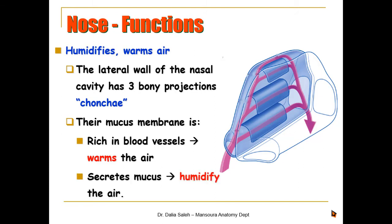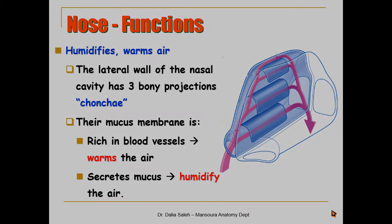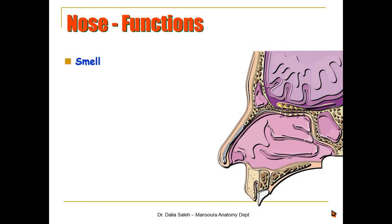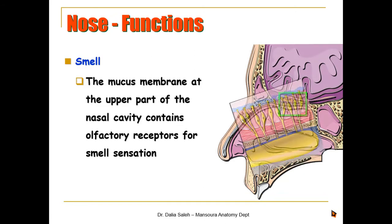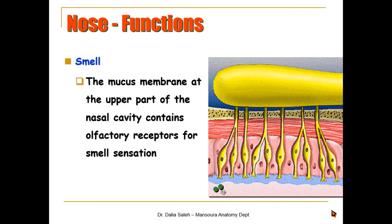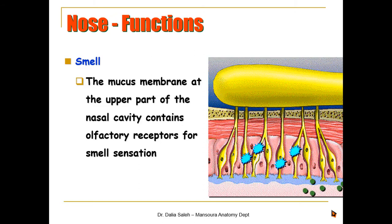Another function of the nose is smell sensation. The mucous membrane at the upper part of the nasal cavity contains the olfactory receptors. Chemical substances dissolve into this mucous membrane and stimulate the olfactory receptors. The nerve impulse is then transmitted via the olfactory nerve to the base of the brain and on to a specific center at the cerebral cortex, where the brain differentiates between different types of smells.